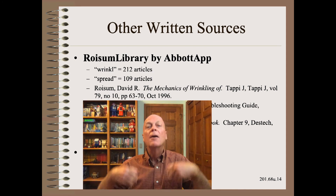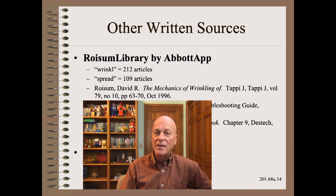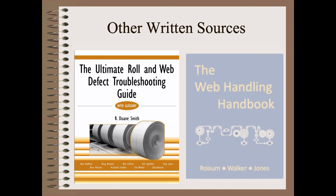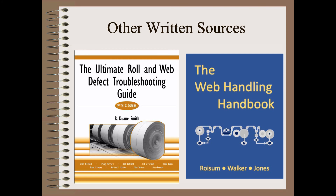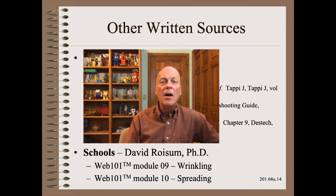Wrinkling and spreading are by far the best documented of the web handling interest areas. There are 300 articles, columns, conference papers, PhD theses, etc. on these subjects. If you want a condensed version, we have chapters in the must-have books — first, the Ultimate Roll and Web Defect Troubleshooting Guide, and second, the 750-page Web Handling Handbook. While some enjoy learning by reading, there are faster and more efficient ways to learn about these must-know topics. I spend one half day on wrinkling and spreading in my award-winning Web 101 class, taken by 5,000 students. The time invested in formal training will save you much time, trouble, and money in your plant and with your customers.